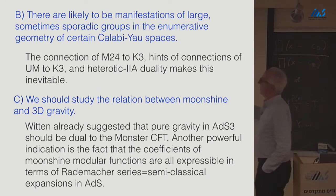I think there are likely to be manifestations of these large sporadic groups in the enumerative geometry of certain Calabi-Yau spaces. That's more or less inevitable, I think, if there's some connection of M24 to K3, which we don't completely understand, there are some hints of connections of umbral moonshine to K3. And if you take that and heterotic two-way duality, you take K3 on the heterotic side, then you have some Calabi-Yau on the type two side, and you're bound to have some kind of action for sporadic groups.